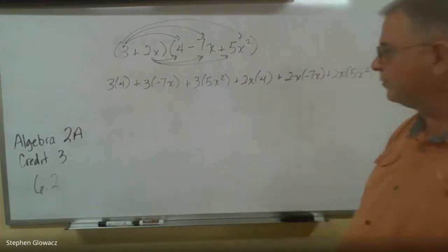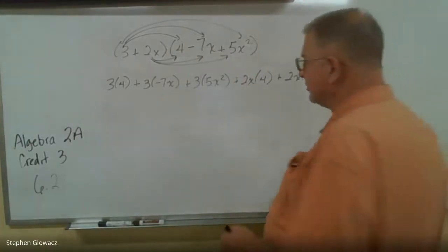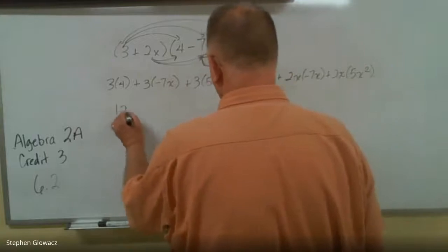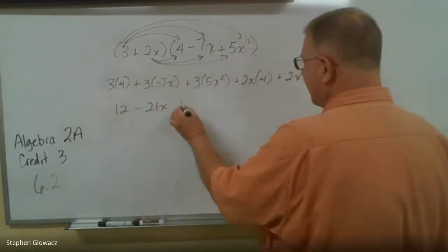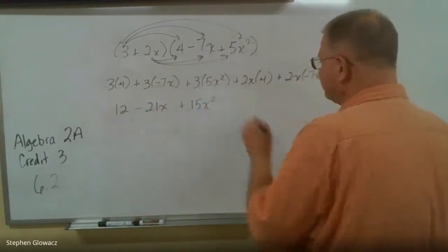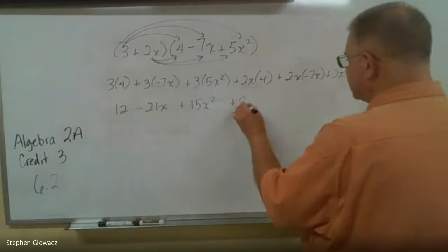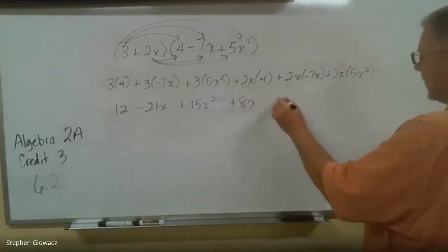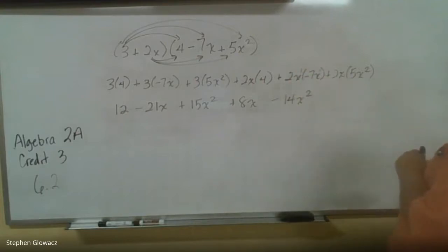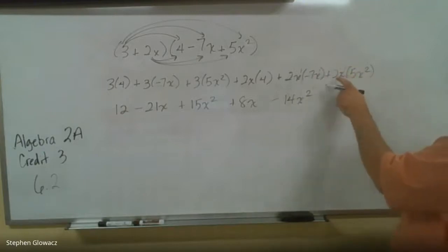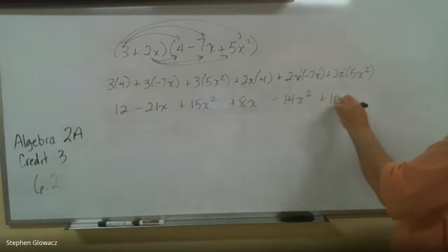Now we need to multiply and then combine like terms. So 3 times 4 is 12. 3 times negative 7 is negative 21x. 3 times 5 is 15x². 2 times 4 is 8x. 2x times negative 7x is negative 14x squared — when there's no exponents, we put those 1s there, so 1 plus 1 is 2. Then 2x times 5x² gives us 10x³, because 1 plus 2 is 3.